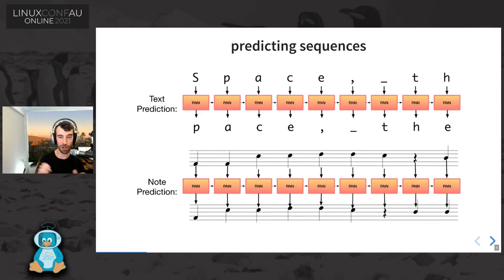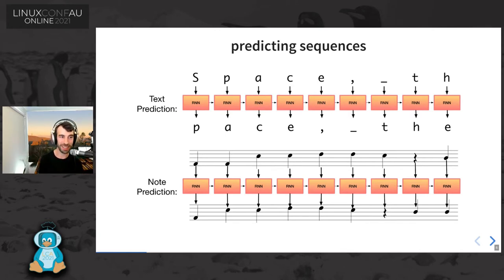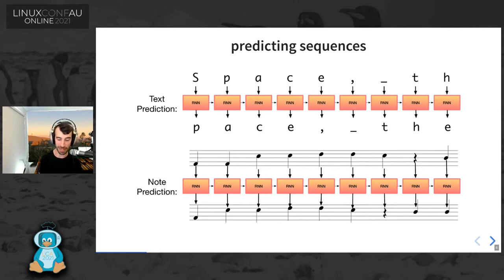I call this note prediction. There's a very popular kind of machine learning algorithm for doing this called a recurrent neural network. It's a little bit old news — recurrent neural networks have been on the way out in terms of very big AI and big tech text models — but they're still very useful for music, particularly the models I'm going to talk about today.